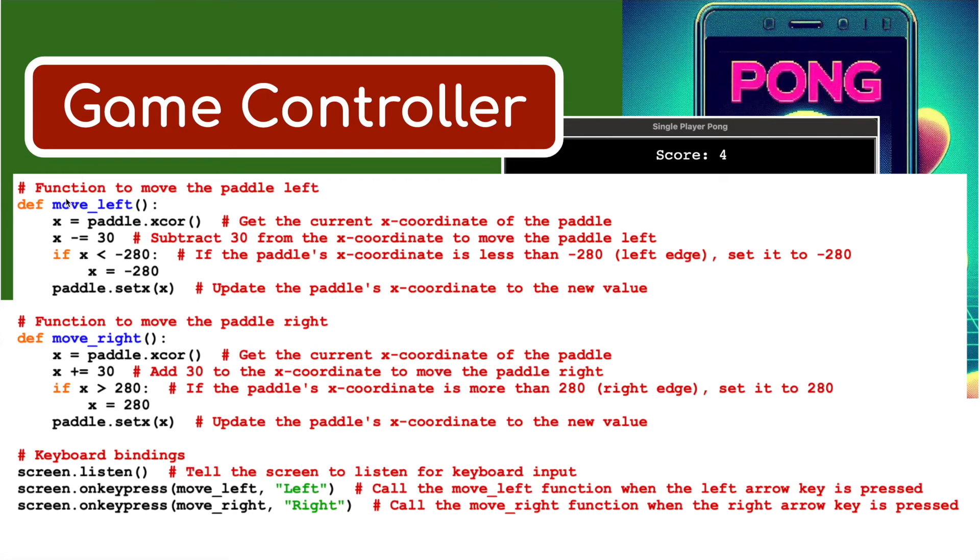I'm defining two functions here - move_left function and move_right function. We've got to get the current x coordinate of the paddle. Subtract 30 from the x coordinate to move the paddle left. If the x coordinate is less than minus 280 - the left edge - set it to minus 280. Then update the paddle's x coordinate to the new value. So to basically move from the center at zero to minus 280 over to the left.